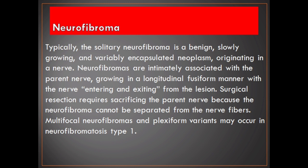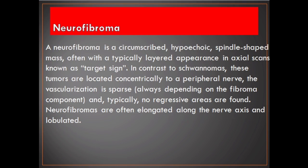Neurofibroma. Typically, the solitary neurofibroma is a benign, slowly growing, and variably encapsulated neoplasm originating in a nerve. Neurofibromas are intimately associated with the parent nerve, growing in a longitudinal fusiform manner with the nerve entering and exiting from the lesion. Surgical resection requires sacrificing the parent nerve because the neurofibroma cannot be separated from the nerve fibers. Multifocal neurofibromas and plexiform variants may occur in neurofibromatosis type 1. A neurofibroma is a circumscribed, hypoechoic, spindle-shaped mass, often with a typically layered appearance in axial scans known as target sign. In contrast to schwannomas, these tumors are located concentrically to a peripheral nerve, the vascularization is sparse, and typically no regressive areas are found.